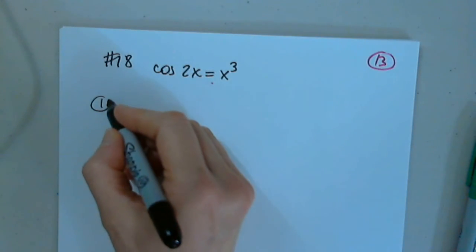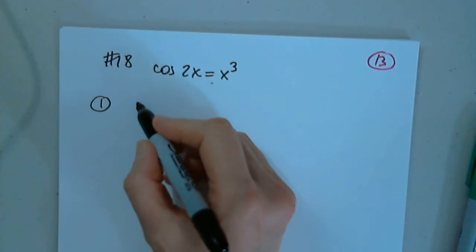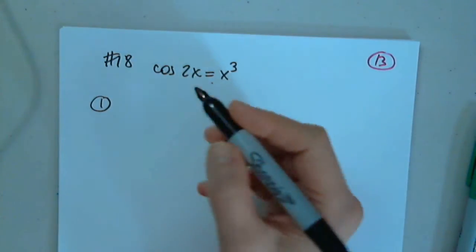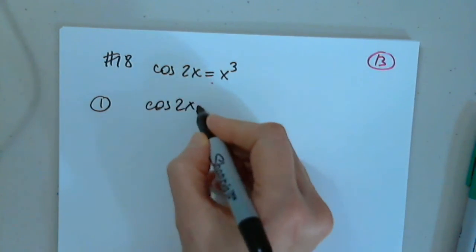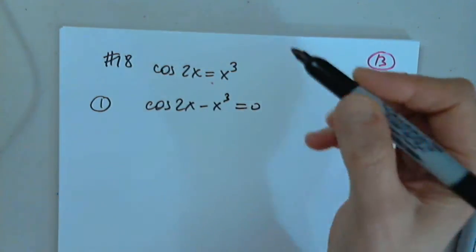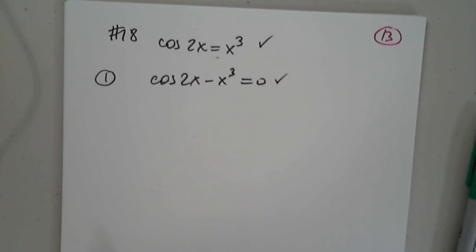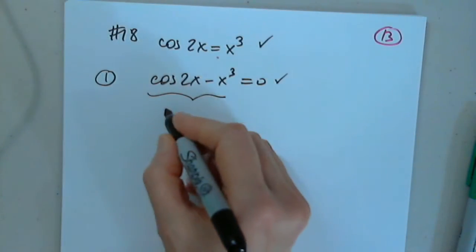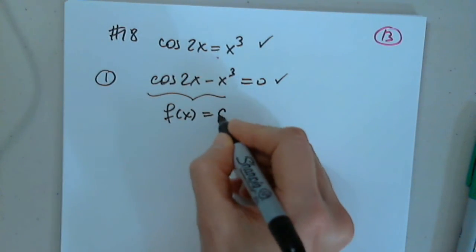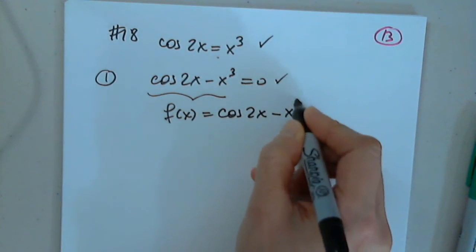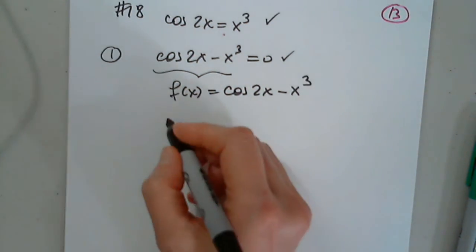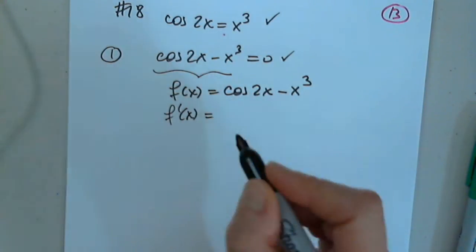In the first step, I create a function like we did with the Intermediate Value Theorem. Cosine 2x minus x cubed equals zero. Solving this means solving this. They are identical. So now I create the function cosine 2x minus x cubed. I find its derivative because I need it later.